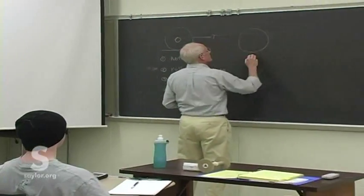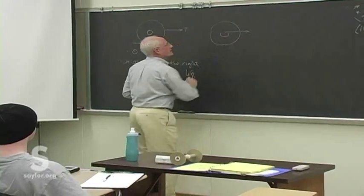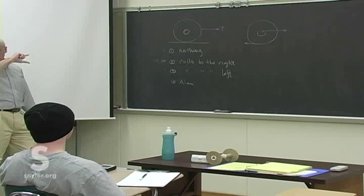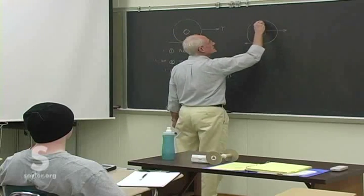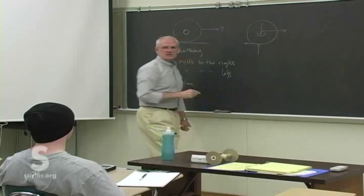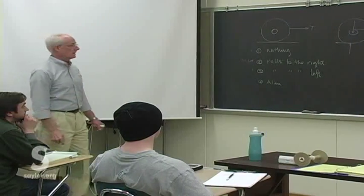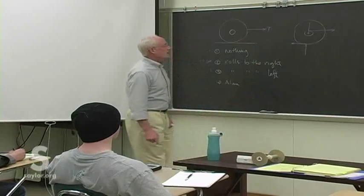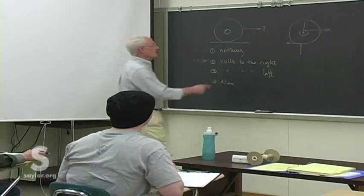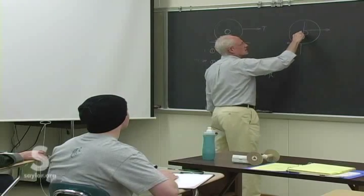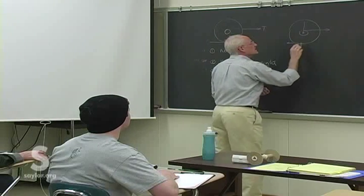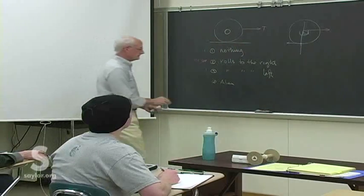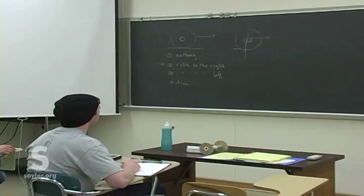Looking at the kinetic diagram: there's the force in the string and static friction in the opposite direction. It's the torque those forces apply that causes it to roll. Weight and normal force are static forces in this problem. Summing moments about the contact point, we clearly have a net moment in one direction — that's part A.